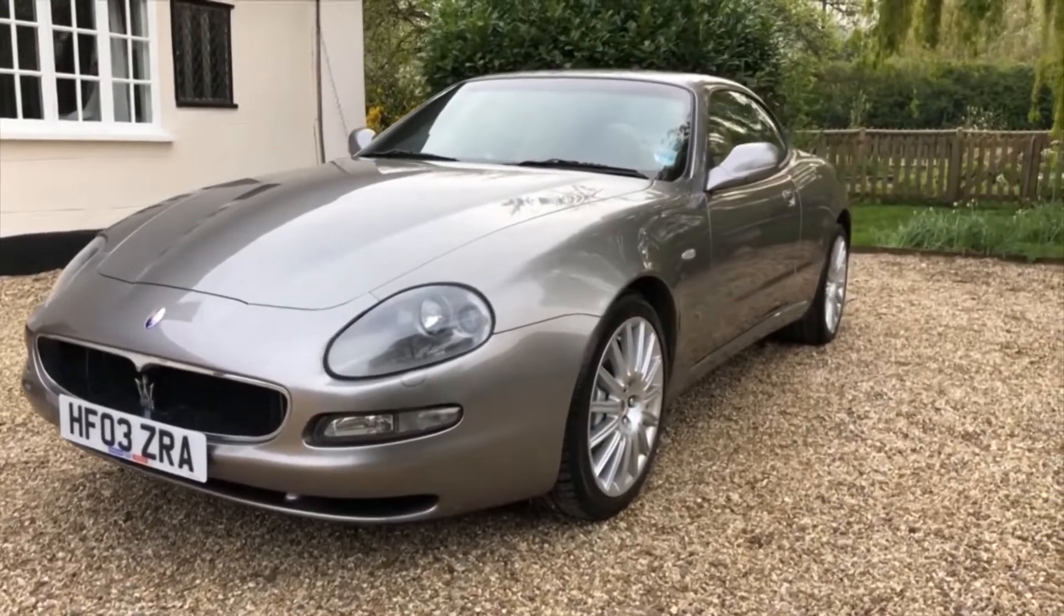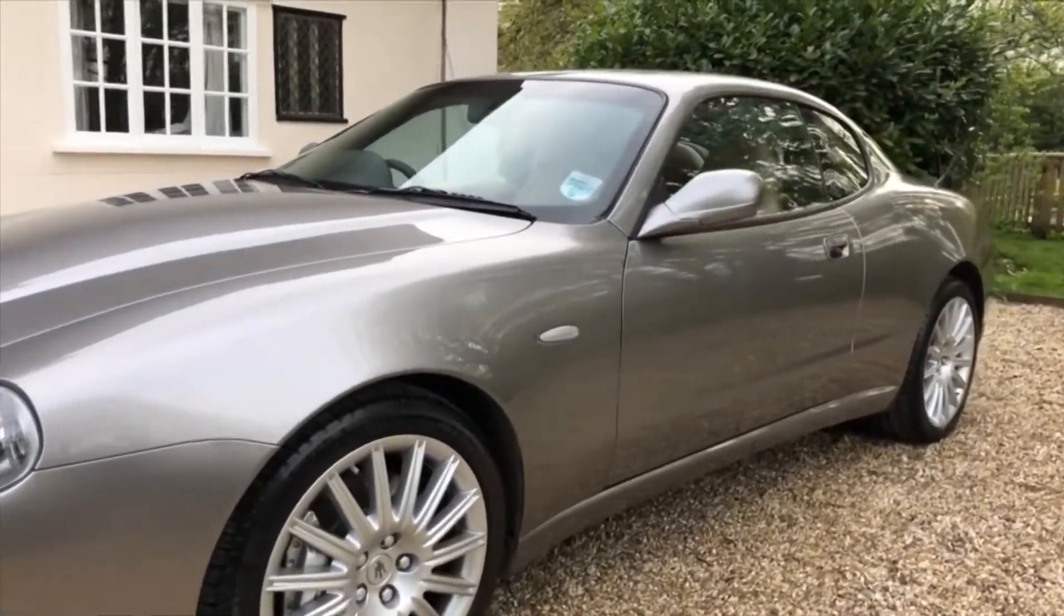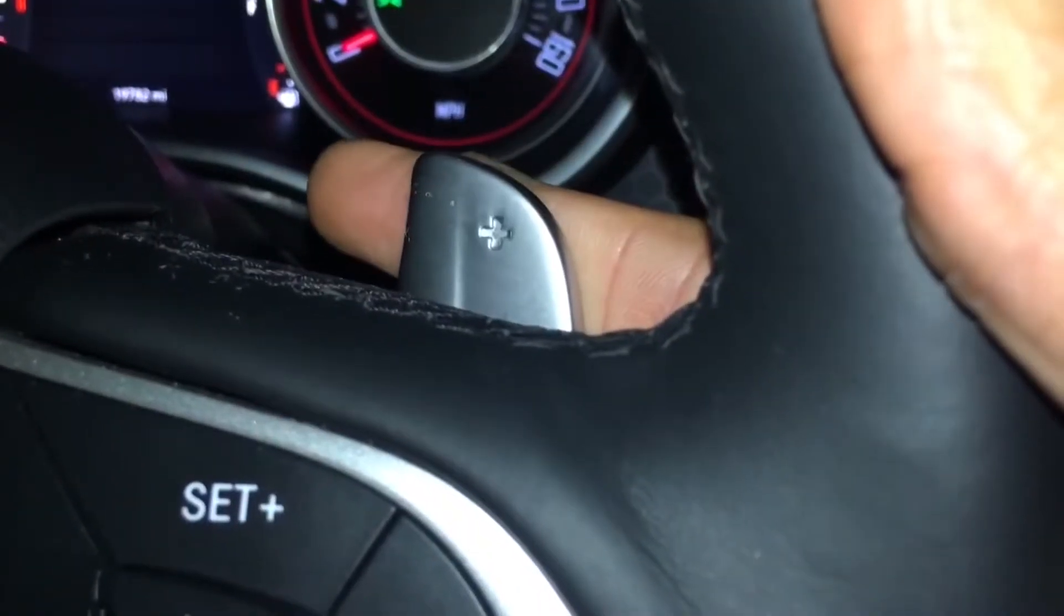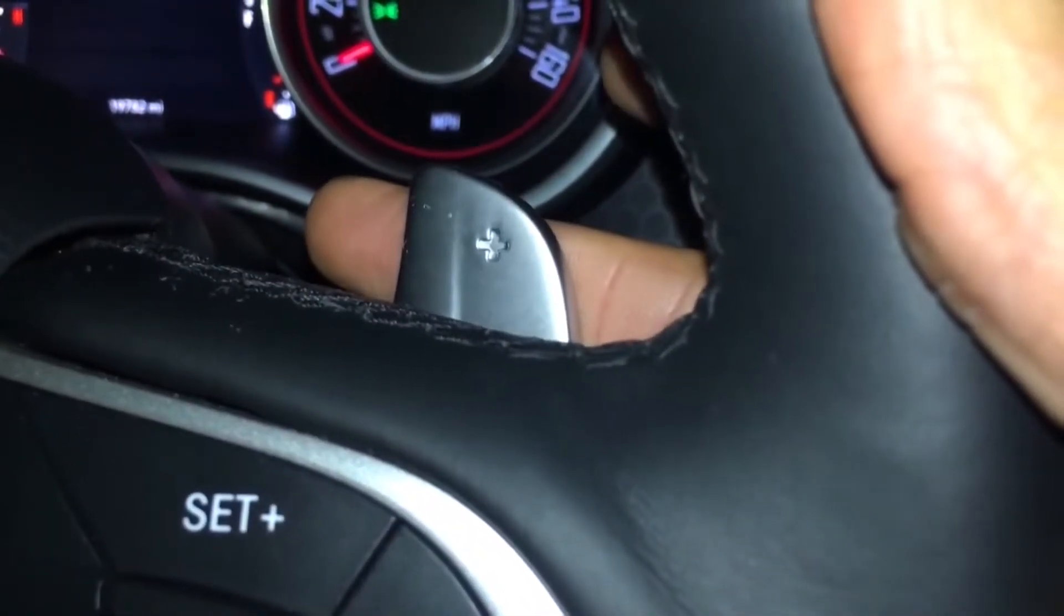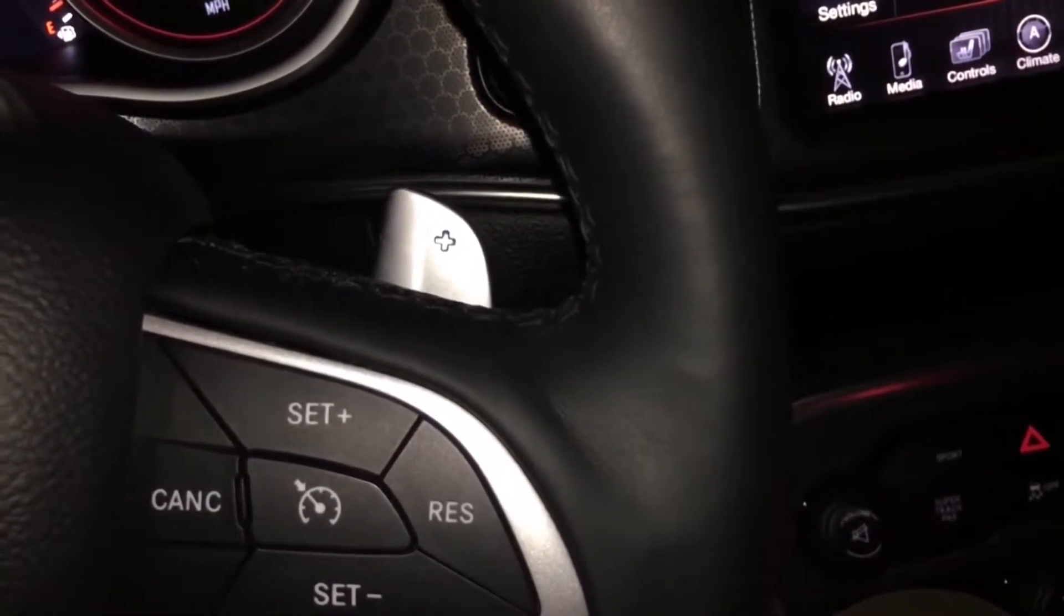Cambio Corsa is a Maserati Coupe and Spyder automated manual transmission that was introduced from 2001 to 2007. The Cambio Corsa transmission uses paddle shifters for up and downshifts, while buttons on the central console engage reverse gear.